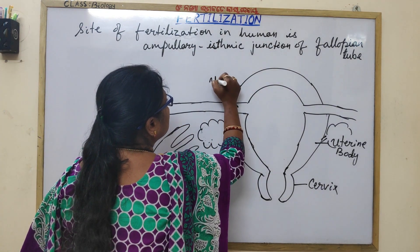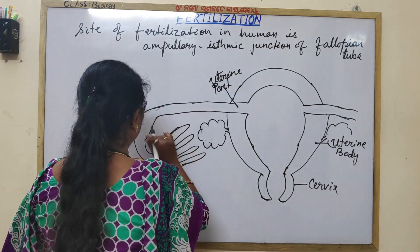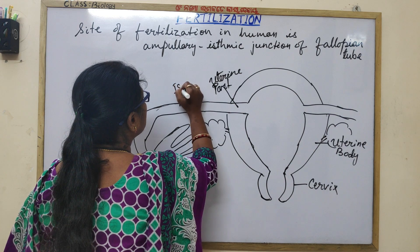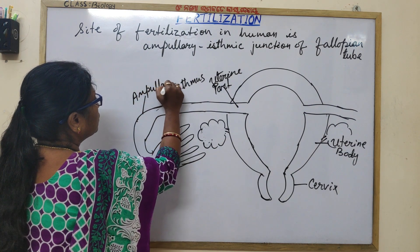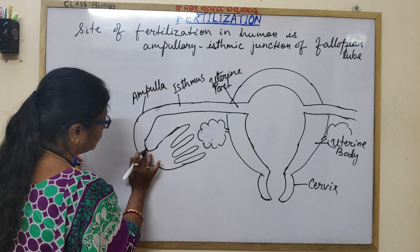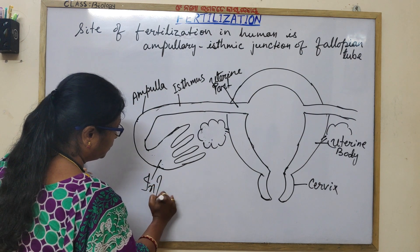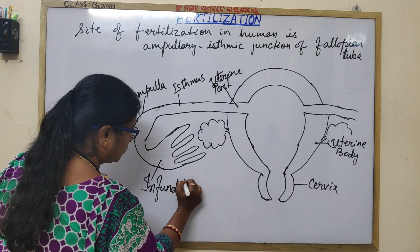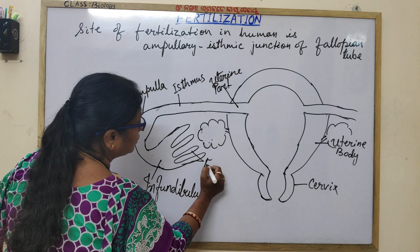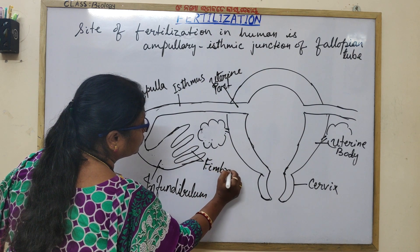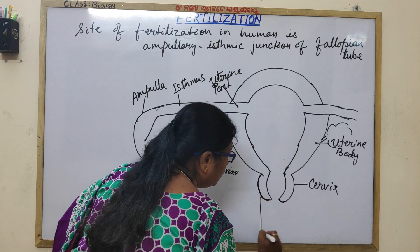This is the uterine part. The distal wider part is the infundibulum — funnel-shaped. These are the fimbriae. This is the vagina.